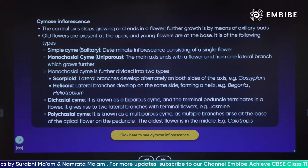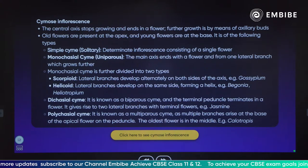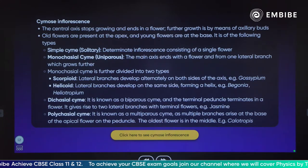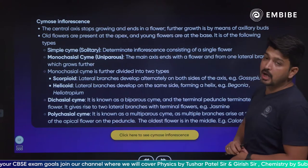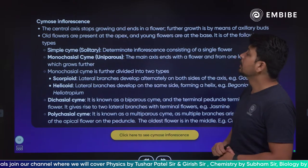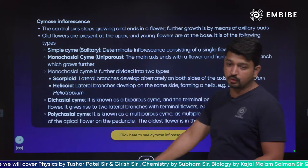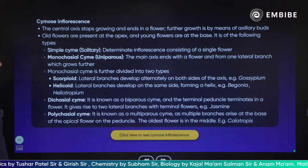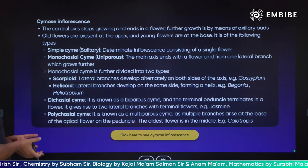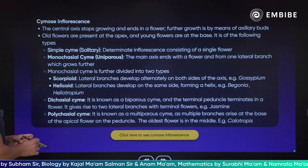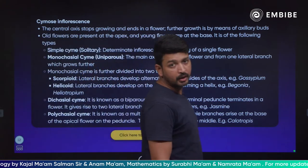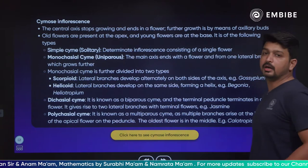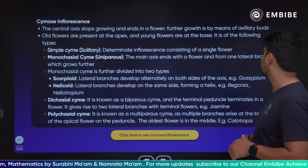Let us understand the cymose inflorescence. In cymose inflorescence, the central axis stops growing and ends in a flower. Further growth is by means of axillary buds. Old flowers are present at the apex, and young flowers are present at the base.